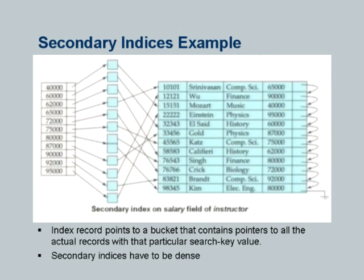On a primary index, you can have sparse entries and then build a multi-level index. A secondary index does not give you this benefit — you need an entry per key value. If you have multiple records with the same key value, one option is a bucket of pointers, another is multiple entries, one per record. Even a secondary index file is sorted on the search key, which allows you to build a sparse index on it and create a multi-level index. That is conceptually how indices are built.